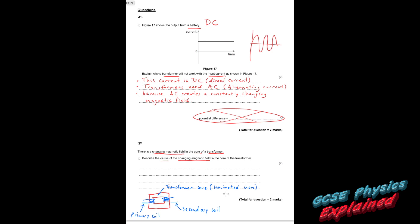And it's laminated, which means it's in sheets, because that helps the transformer to be more efficient. So basically, if we've got a change in magnetic field in this core, it's because there was a change in current in the primary coil. And that'll get you your two marks. Every time that I'm putting a bullet point here, I'm expecting a mark for it. And this is exactly how I would set it out in your exams as well.